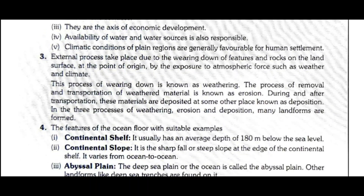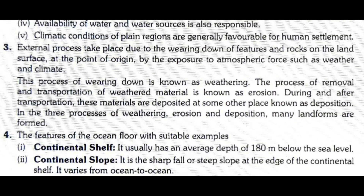Question 3: Describe how external processes cause wearing down and rebuilding of land surfaces. External processes take place due to the wearing down of features and rocks on the land surface at the point of origin by exposure to atmospheric forces such as weather and climate. This process of wearing down is known as weathering. The process of removal and transportation of weathered material is known as erosion. During and after transportation, these materials are deposited at other places — a process known as deposition. Through weathering, erosion, and deposition, many landforms are formed.